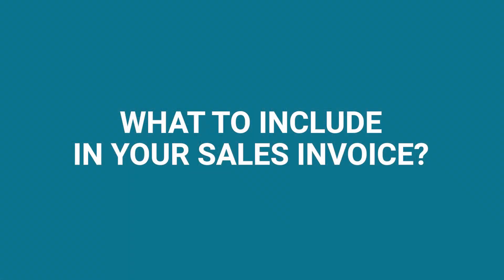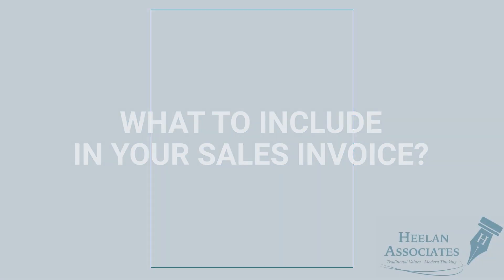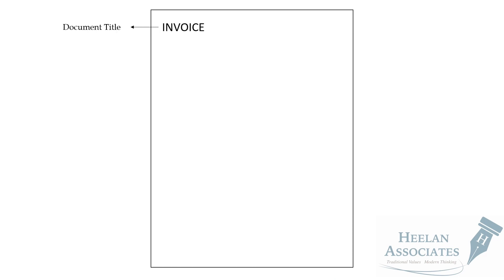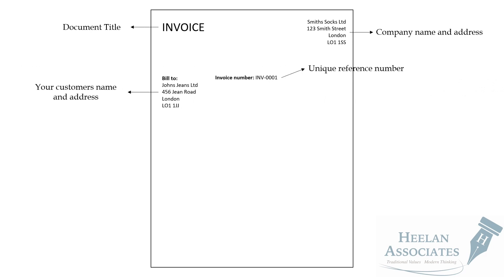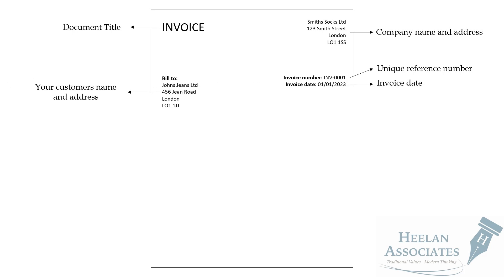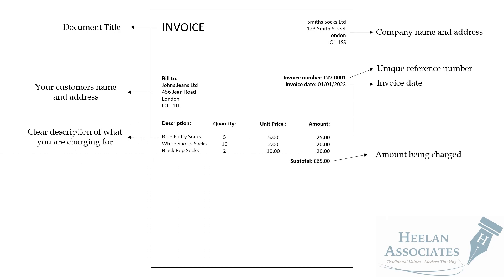So what do you need to include in a sales invoice? You need to include a document title stating 'invoice,' your company name and address, then your customer's name and address, along with an invoice number — this is a unique reference number, ideally in a sequence order. Then include your invoice date and the description of what you're charging for, then list the amounts being charged. If you're VAT registered, you need to include the VAT amount and your VAT registration number under your company name and address.